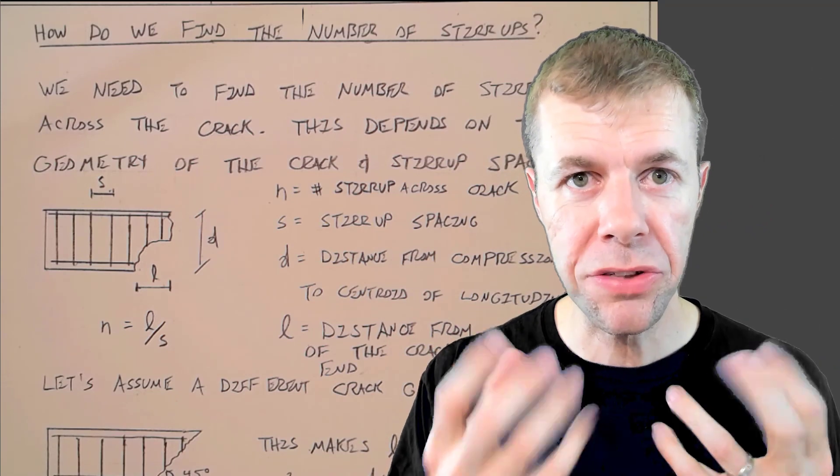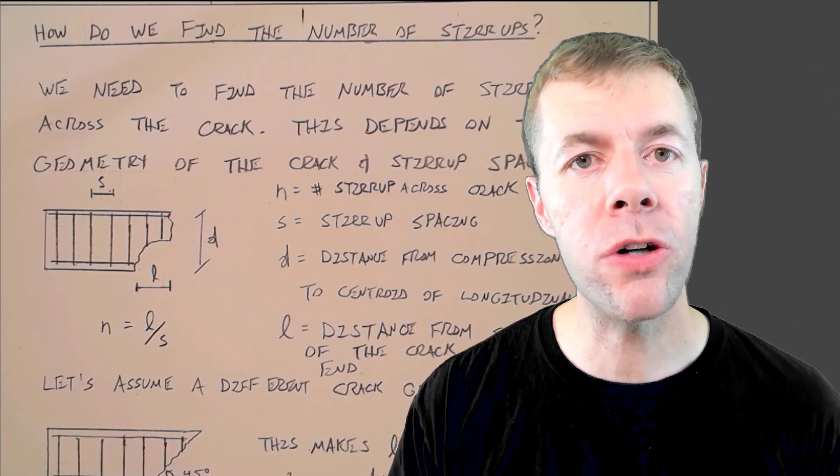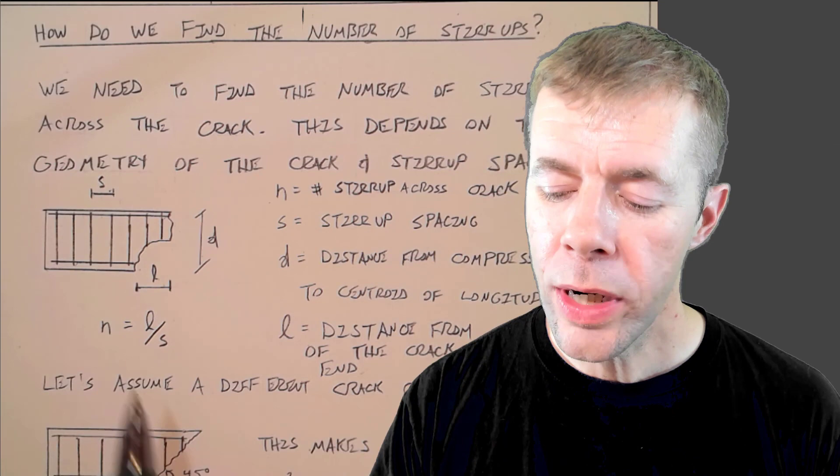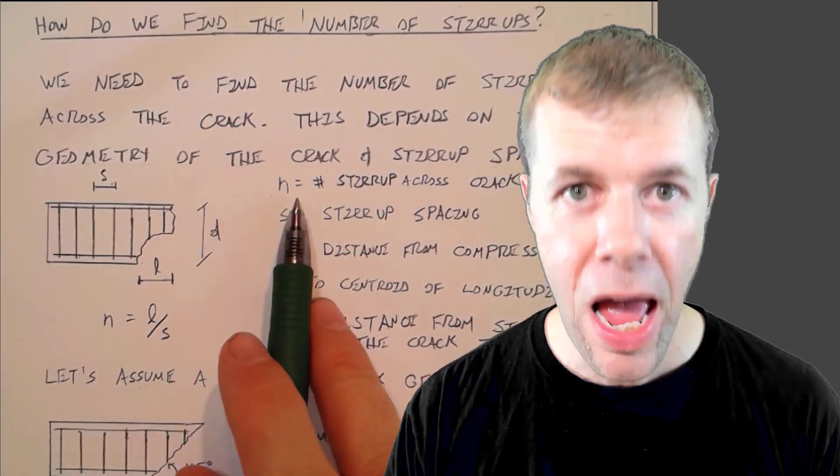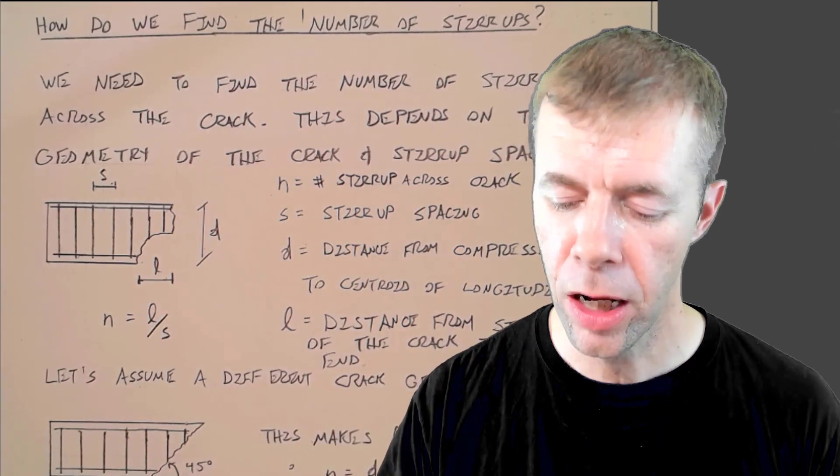Now I know my AV, I know what my stress is. Let's find out how many bars there are. We need to find the number of stirrups that cross this crack, and this is going to depend on the geometry of the crack and also the stirrup spacing.